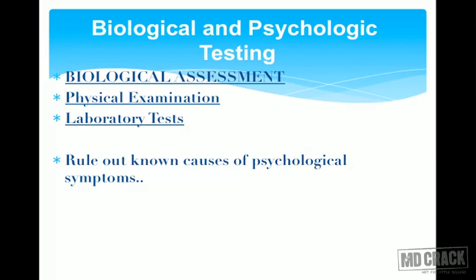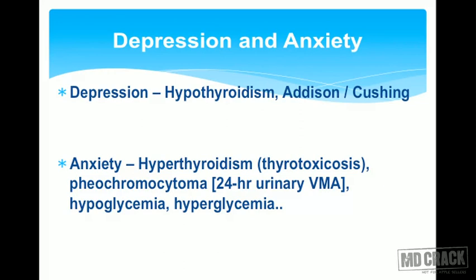Why is it important? Depression and anxiety are two symptoms which may be present in many medical conditions. For example, depression may be present in hypothyroidism, as well as in Addison's and Cushing's disease.